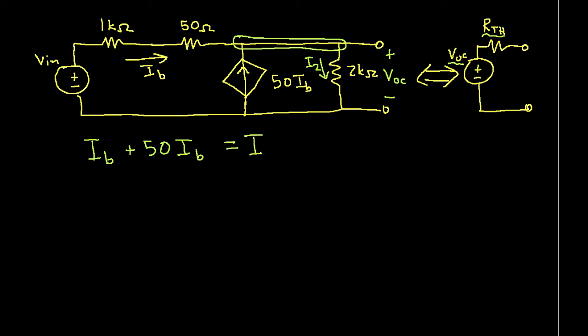I sub 2, again, is the current leaving the node through the 2k ohm resistor. By Ohm's law, I2 is equal to VOC over 2k ohms.